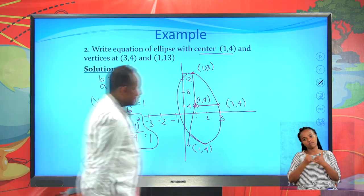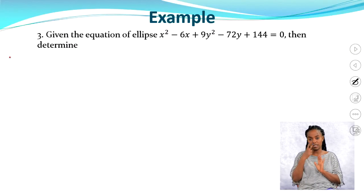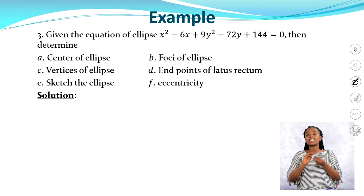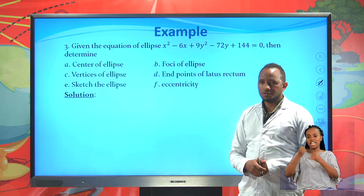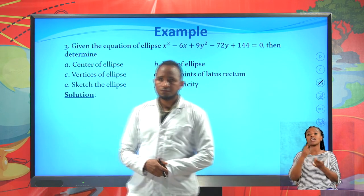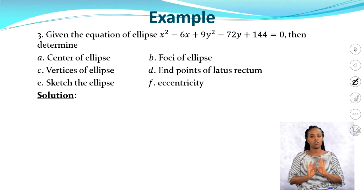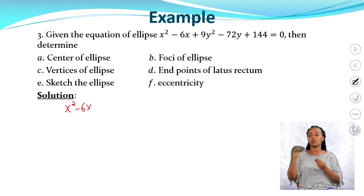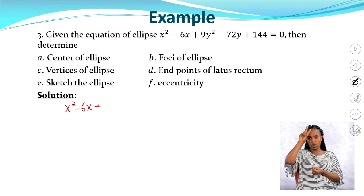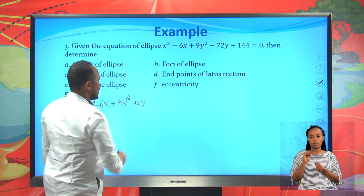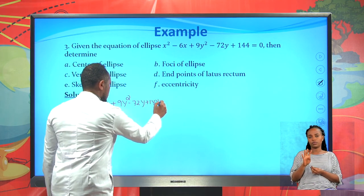Now let's see one last example. Given the equation of the ellipse: x² − 6x + 9y² − 72y + 144 = 0, determine the center, foci, vertices, endpoints of the latus rectum, sketch the ellipse, and find its eccentricity.